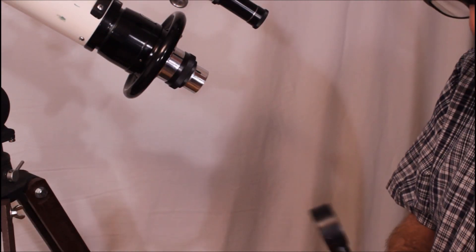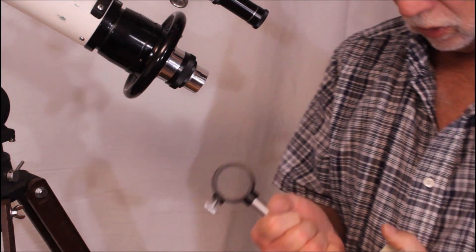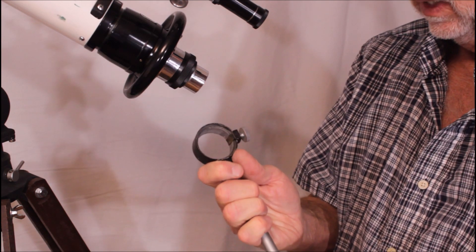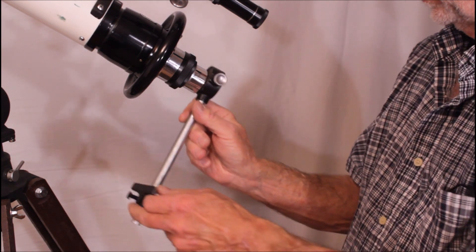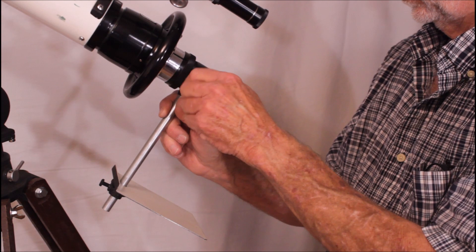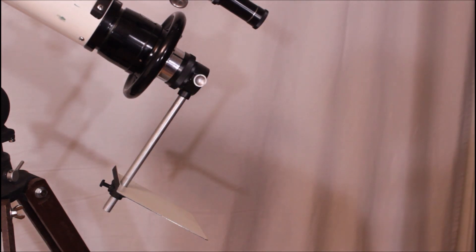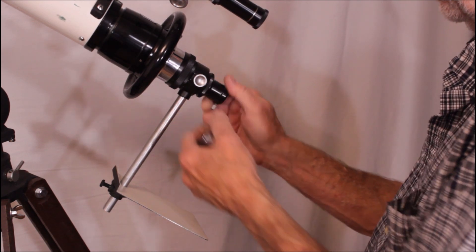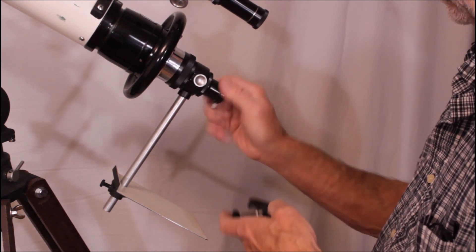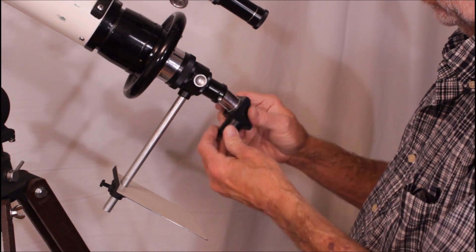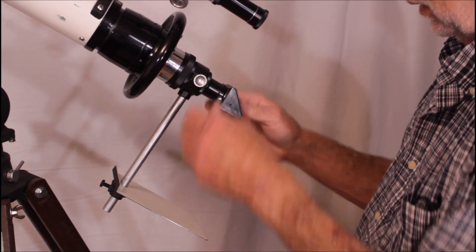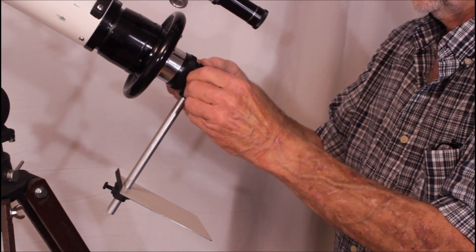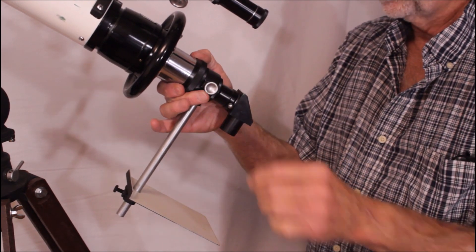Now we're going to do some solar projection observation. This comes in the box with the scope and this slides right on here like so. Then you put in the adapter, and you put in of course you need an eyepiece. Then you're all set for solar observations.